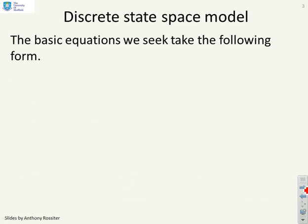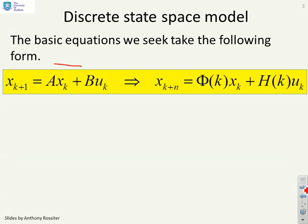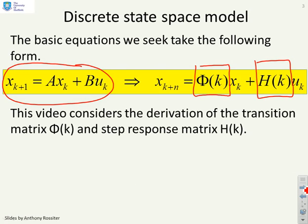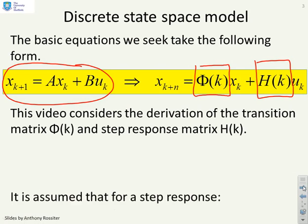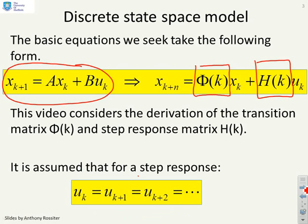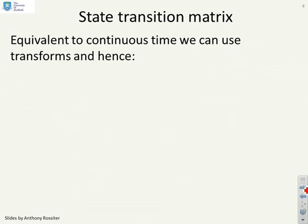A discrete state space model, the basic equations you're interested in are of this form: x_{k+1} = Ax_k + Bu_k. And what we want to do is say can we find a state transition matrix Φ(k) and a step response matrix H(k). We're going to consider how these might be derived. It's assumed that for a step response, we're going to take constant values of the input.